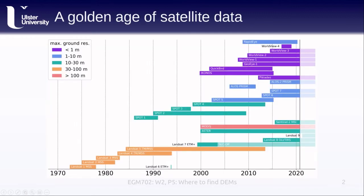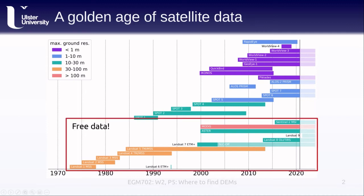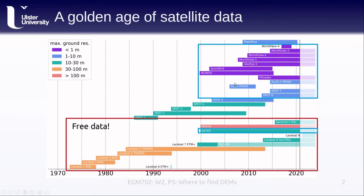We're currently in a bit of a golden age of satellite data. We have a number of different datasets that are freely available, where you can find images for anywhere on Earth over a very long period of time. We also have a number of high-resolution satellite sensors acquiring images in stereo, which allow us to calculate topography — including the different WorldView satellites and the GeoEye, which are all part of the Digital Globe constellation. We also have Pleiades data, ALOS PRISM both one and two, as well as different SPOT sensors and ASTER, giving us a number of different options for actually calculating DEMs using satellite images.